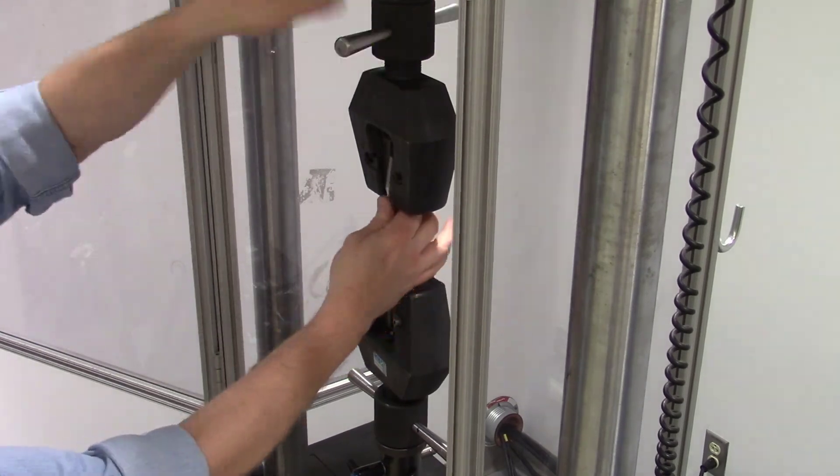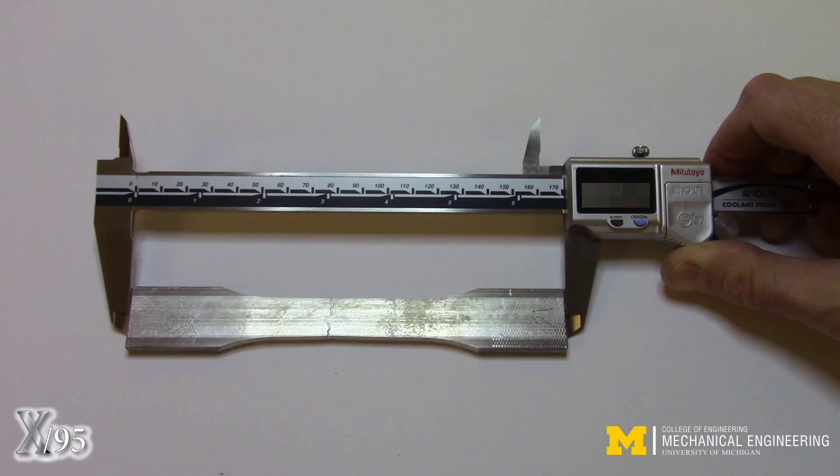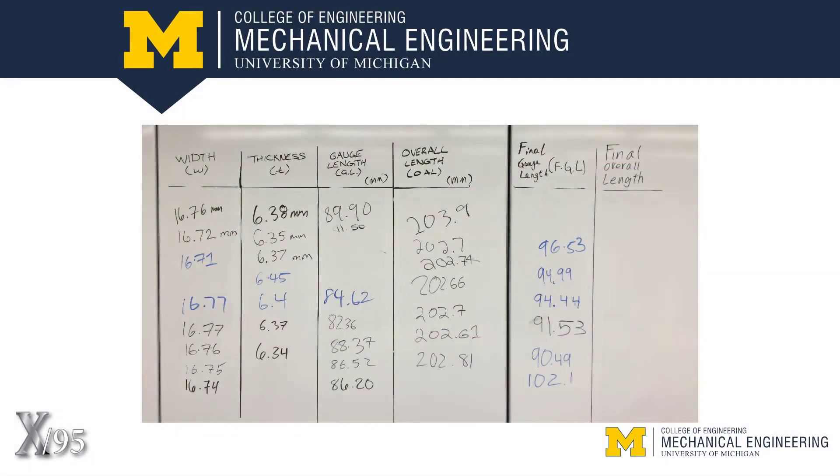Remove the test specimen from the grips. As a sanity check, measure the overall length of the two segments and calculate strain. How does this compare with the collected data? Record the measurements on the whiteboard.